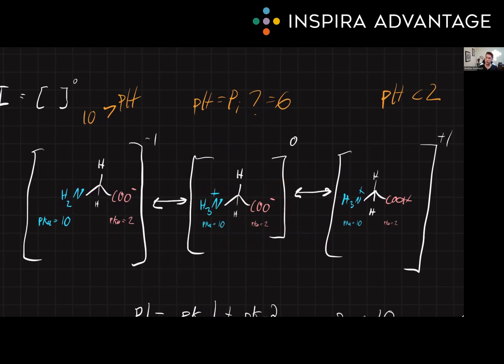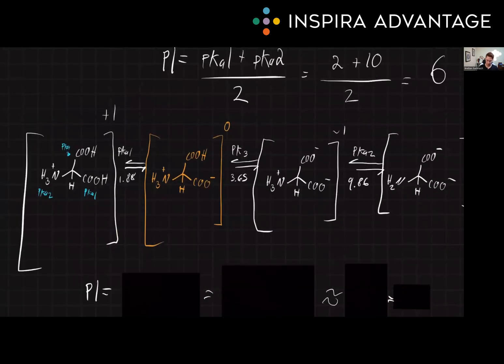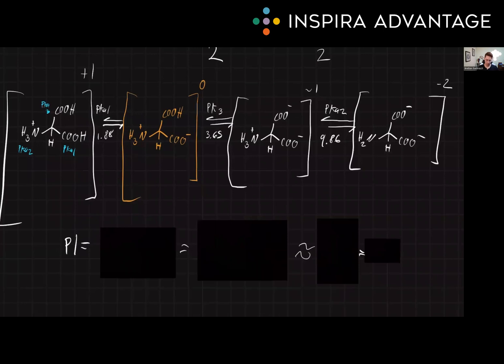We've got some tricky ones out there that have three pKa groups. Let's take a look at a more complicated one like that. Take a moment to pause the video to see if you can solve what the pI will be of this amino acid.